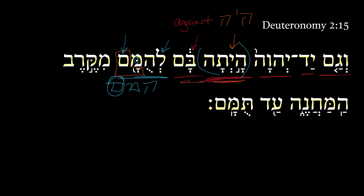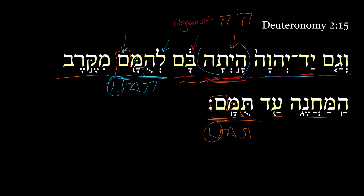'To discomfit them from the midst of the camp until the completion of them.' Here's another Qal infinitive construct, this time of the root tamam — and you also see the same mem phenomenon there, as we saw previously — plus the 3MP suffix. So we get: 'Moreover, the hand of the Lord was against them to discomfit them from the midst of the camp until their completion.'